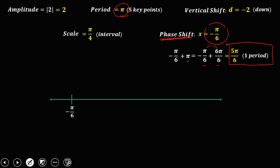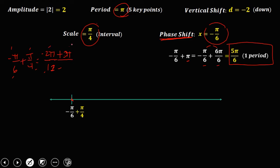We already have our first key point, so we need to find 4 more using the scale or interval. Negative π over 6 plus π over 4: find the LCD, which is 12. So 12 divided by 6 is 2, times negative π gives negative 2π; plus 12 divided by 4 is 3, times π gives 3π. Negative 2π plus 3π gives π over 12. So the second key point is π over 12.